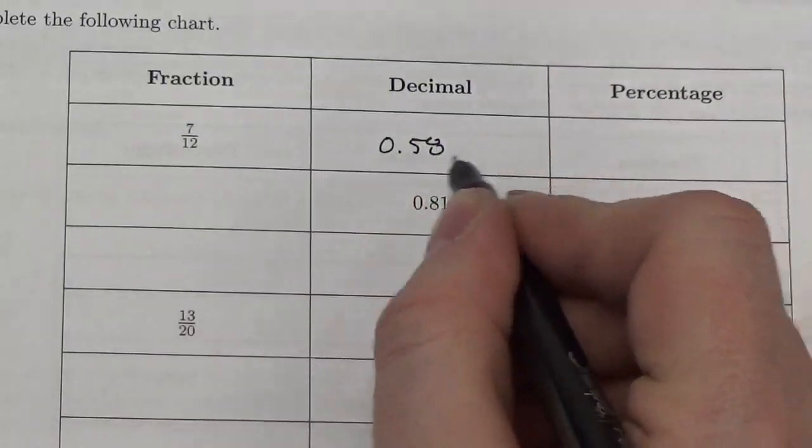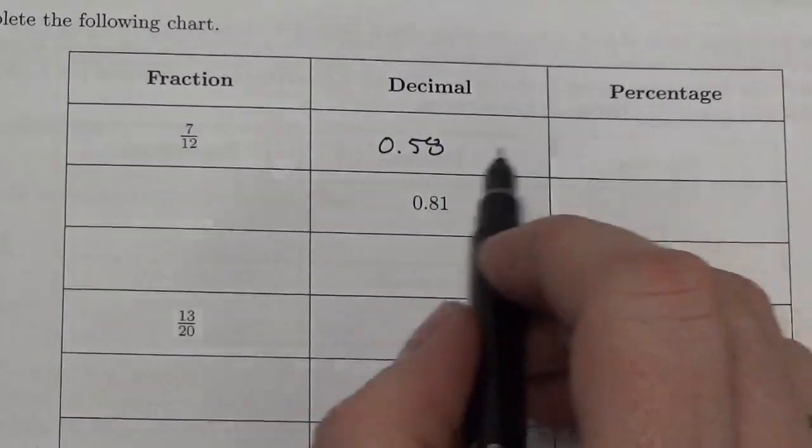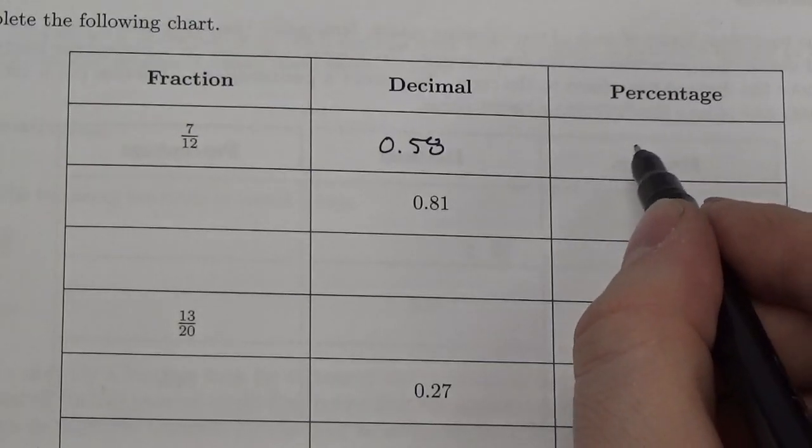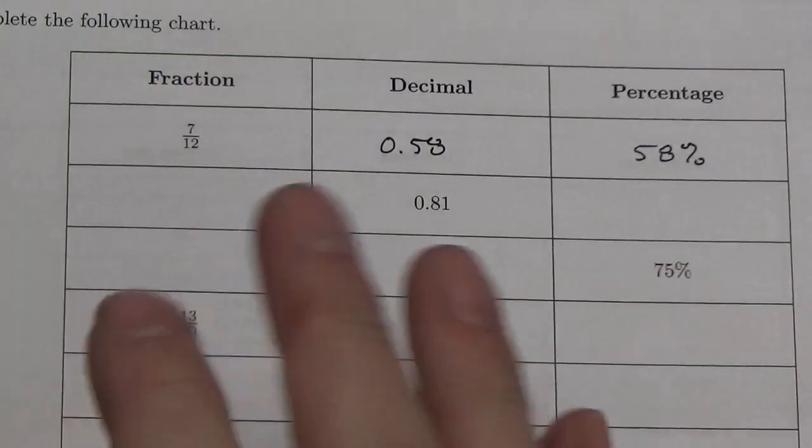Now, there's a repeating 3 after that. But for what I want to accomplish here, that's okay. And then to convert that to a percentage, all I need to do is really just multiply that by 100. Move the decimal two places over to get 58%. Easy.